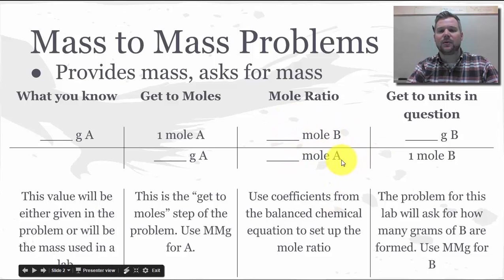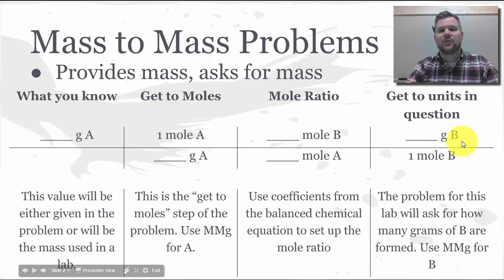That mole ratio gets us from chemical A to chemical B. And then to finish, we're going to go from moles of chemical B up to grams of chemical B using, again, the molar mass and grams of that substance.